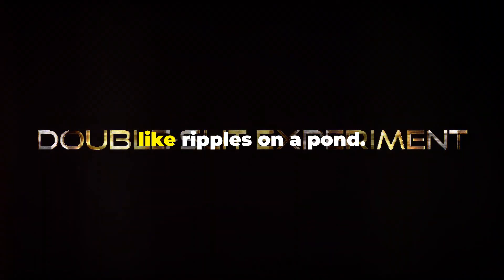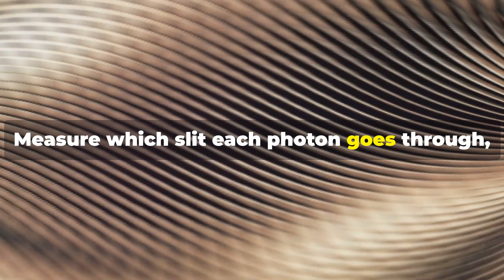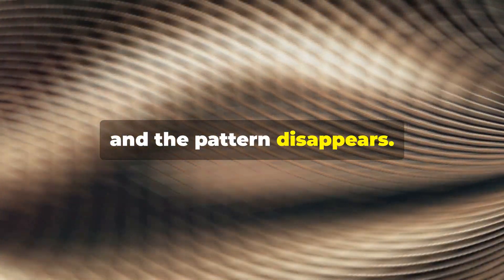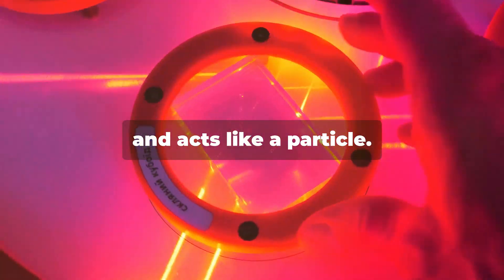Think about the double slit experiment. Shine light through two slits, and you get an interference pattern like ripples on a pond. Measure which slit each photon goes through, and the pattern disappears. It's as if light knows it's being watched and acts like a particle.